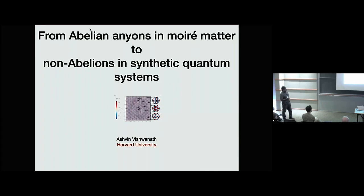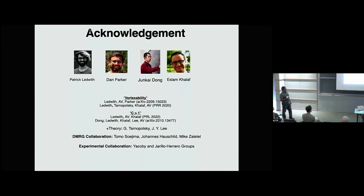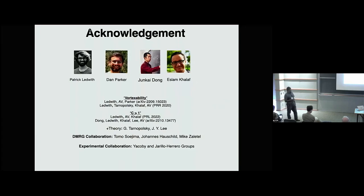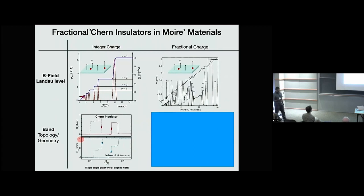So the first part will be about creating anyons in Moiré systems, and I should acknowledge my collaborators, especially Dan Parker, Junkai Islam, and Patrick — Patrick is here, he's the quiet one in the back. And we've had some very nice collaborations with Mike Zaletel's group, the MRG, as well as experimentalists. So really I'll be focusing on Moiré materials and trying to realize these states called fractional Chern insulators.